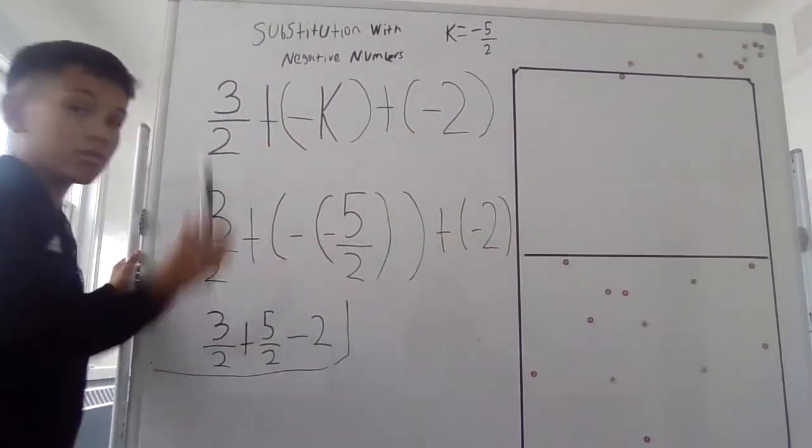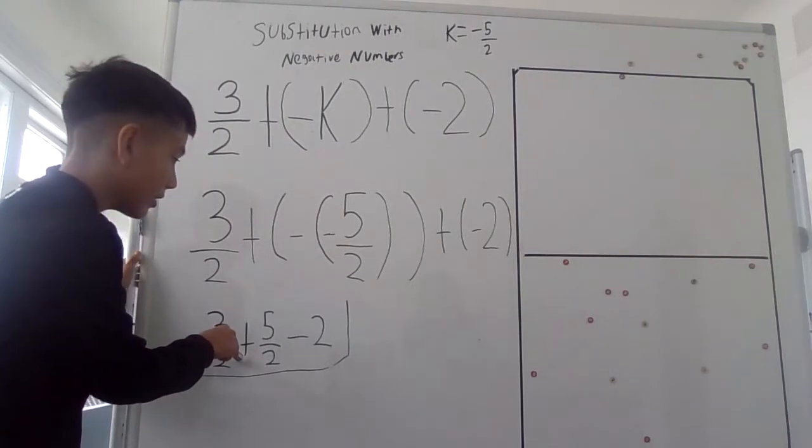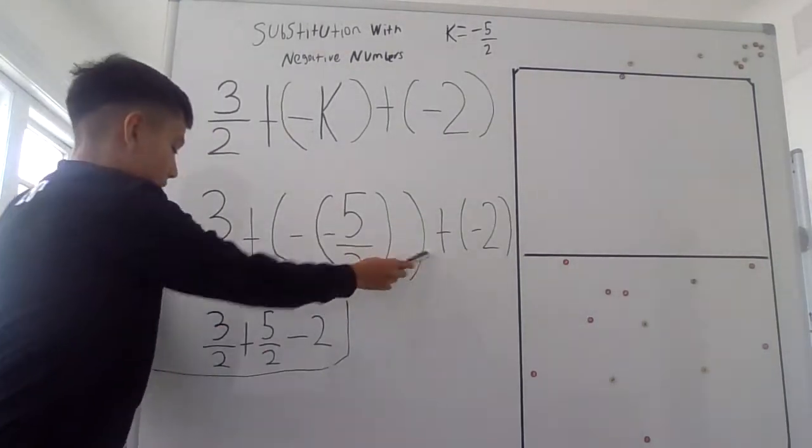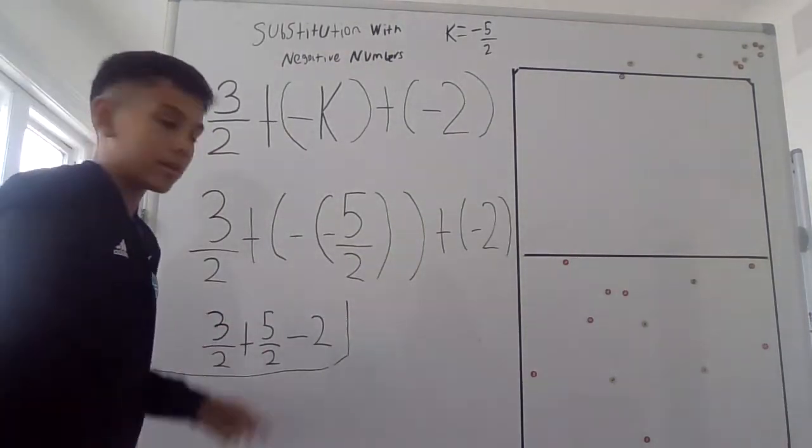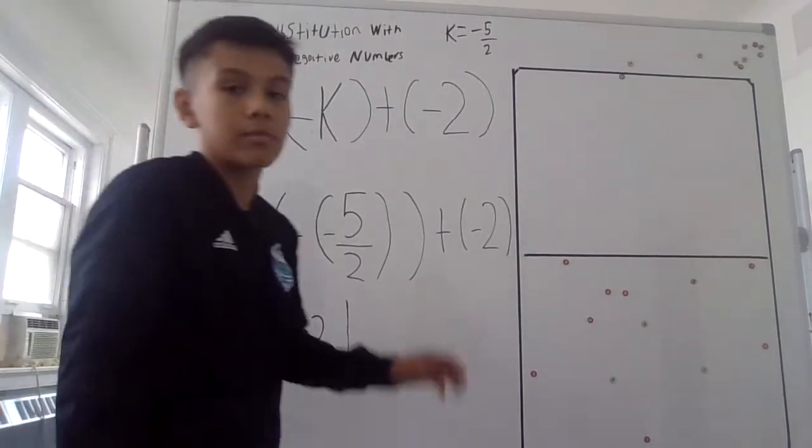Then since negative negative equals a positive, I put the positive here and it got rid of these parentheses. So it's 3 over 2 plus 5 over 2 subtracted by 2.